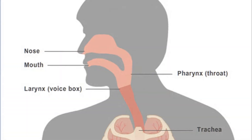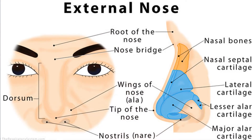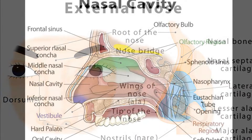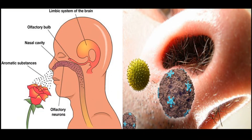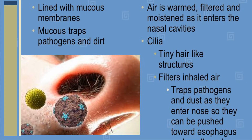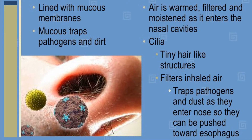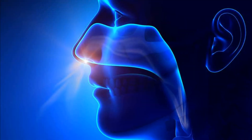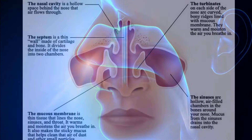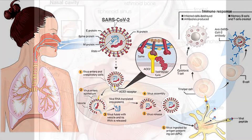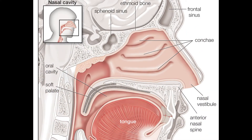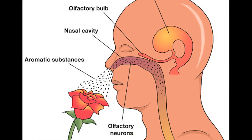Nose. Air enters the body through the nose. Externally, the nose consists of two nostrils. Internally, it opens into the nasal cavity. The lining of the nasal cavity secretes a sticky substance which traps harmful organisms. The hair lining the cavity also acts as a filter and prevents the entry of harmful substances. As the air passes through the nasal cavity, it is warmed and made moist. Functions of the nose are to prevent the entry of harmful substances into the body, warm the air and add moisture to it as it passes into the body, and to help us perceive smell.